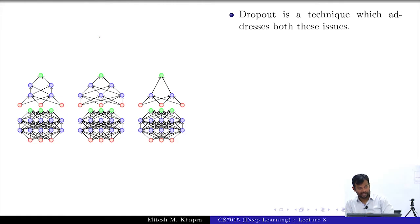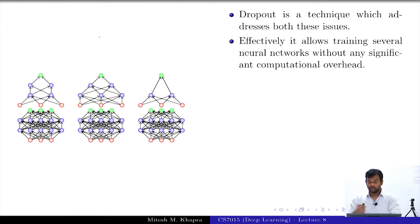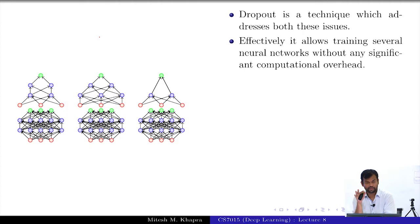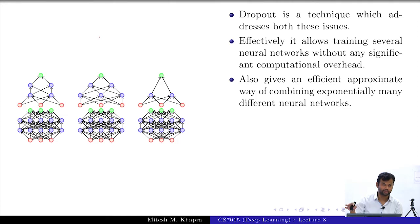Dropout is a technique which addresses both of these issues — train time computation as well as test time computation. It effectively allows training several neural network architectures without any significant computational overhead, and it also allows us to do this quickly at test time.